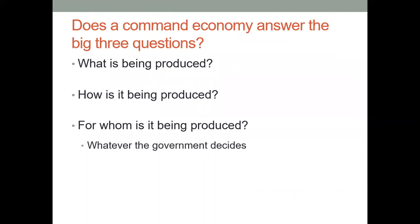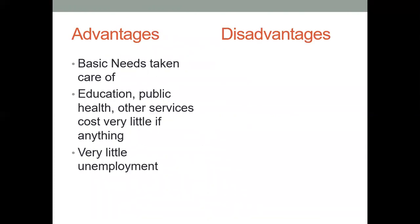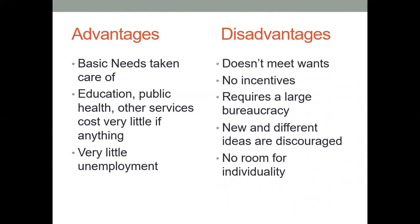In the command economy, what is being produced is decided by the government. How it is produced — the government answers that too. For whom — whomever the government decides has needs. Advantages include overcoming failures of competitiveness and caring for education, health, and services, with very little unemployment since the government employs everyone. However, it does not meet the wants of the people, there are no incentives, it requires huge bureaucracy and regulation, new ideas are discouraged, and there is no room for individuality.